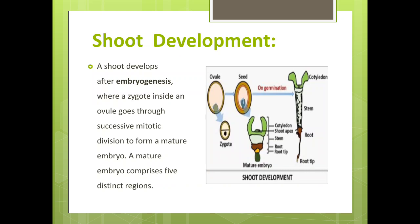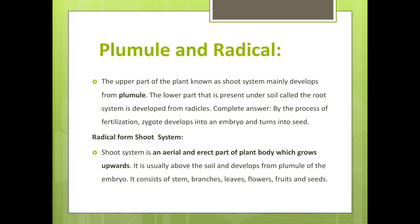Shoot development: a shoot develops after embryogenesis, where a zygote inside an ovule goes through successive mitotic divisions to form a mature embryo. A mature embryo comprises five distinct regions. The upper part of the plant, known as the shoot system, mainly develops from the plumule. The lower part, present under soil, called the root system, is developed from the radicle.